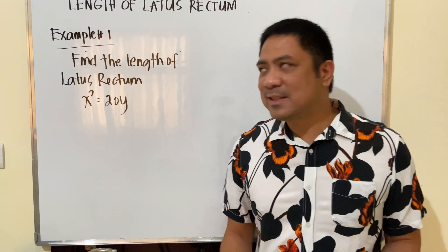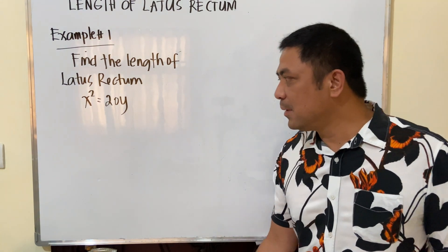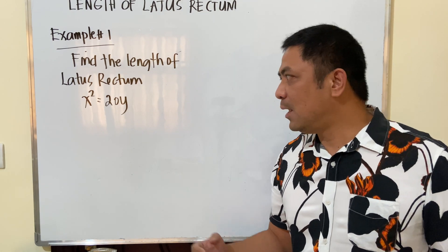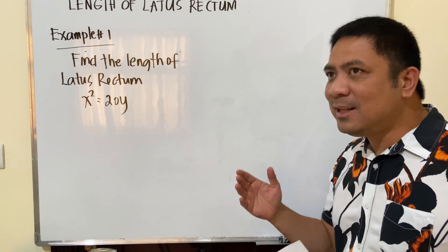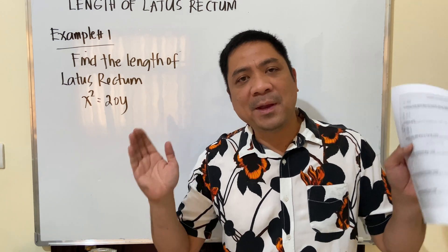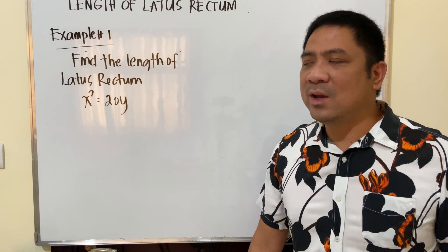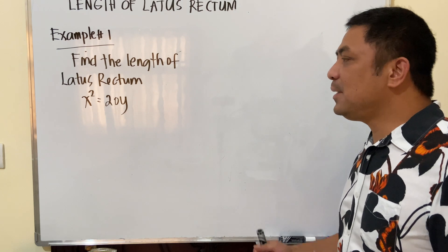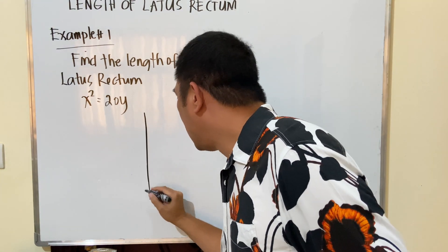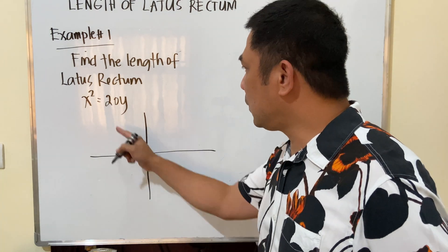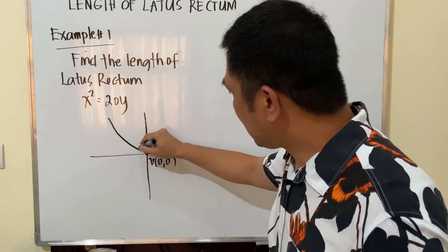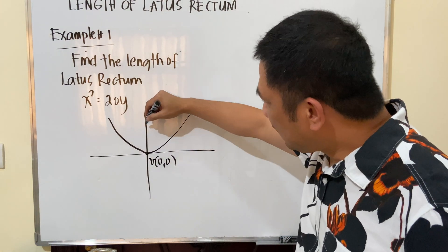Let's solve some examples. First example: find the length of the latus rectum given x² = 20y. We should know how to visualize our parabola. Since x² = 20y, the parabola is opening upward, with vertex at (0, 0).